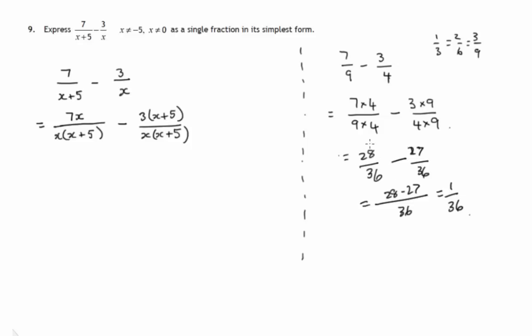Now we've reached the happy state where both the denominators are the same. We've reached the state here where they're both 36ths. So we say, well, how many of these, they're not 36ths, they're x times x plus 5ths. How many do we have? We've got 7x of them minus 3 lots of x plus 5 of them. So we've reached this stage, 28 minus 27 over 36.